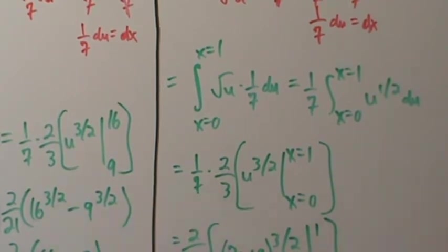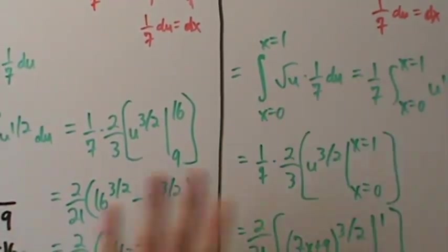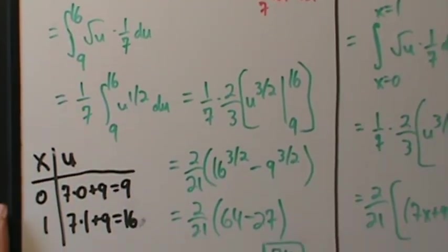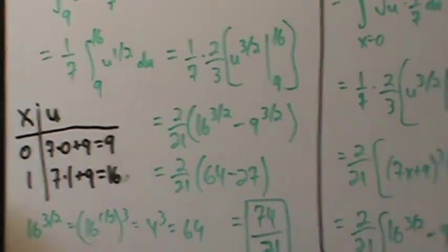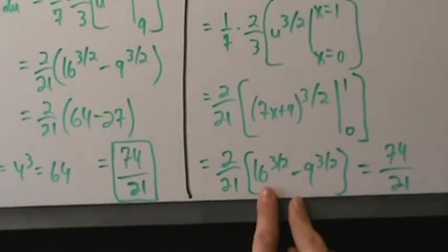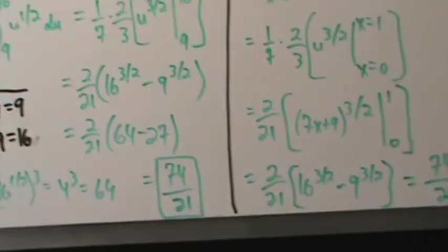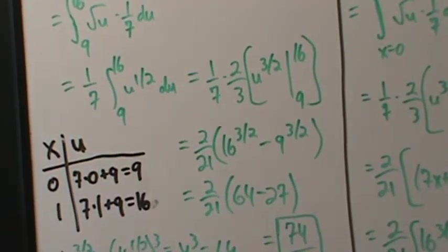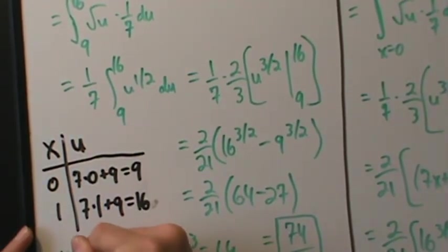There's just too much going on. The algebra ends up being the same calculation either way — if we simplify, it's identical. But with Method 1 you can get the chart out of the way so the rest is simpler.